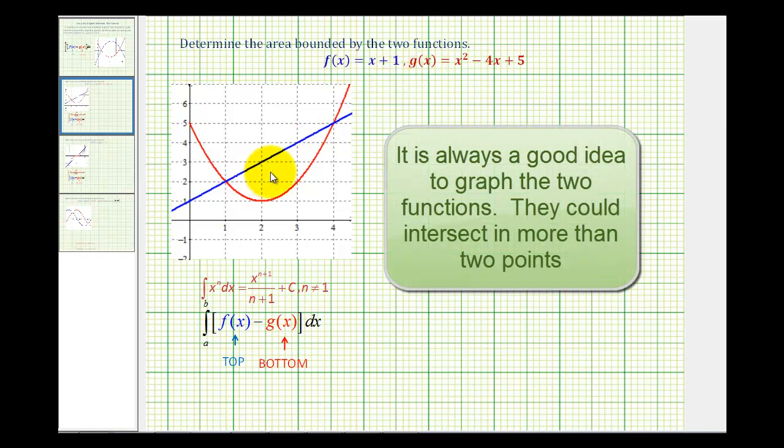Looking at the graph of our two functions here, notice the x-coordinate of the first point of intersection is x equals 1, and the second point of intersection is x equals 4.